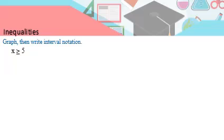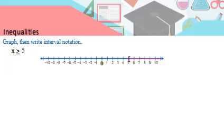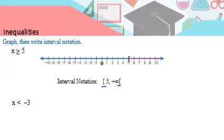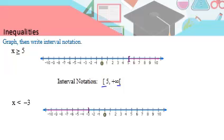Let's graph and write the interval notation. For x greater than or equal to 5: 5 is included, so we close around 5. Written as an interval: 5 to plus infinity, closed on 5 and open on plus infinity because infinity is not a known number. For x strictly less than minus 3: minus 3 is not included, so it goes to minus infinity. Written as minus infinity to minus 3, open bracket around minus 3 because it's not included.